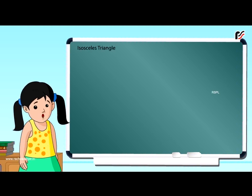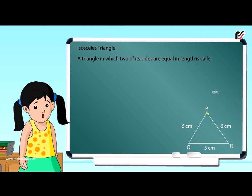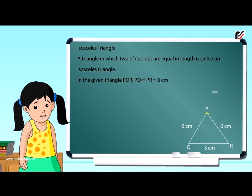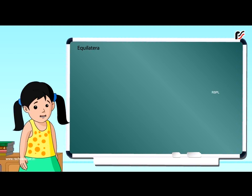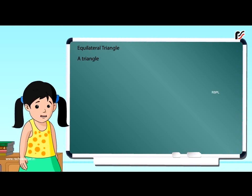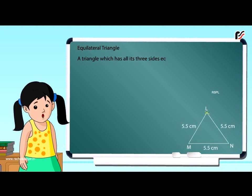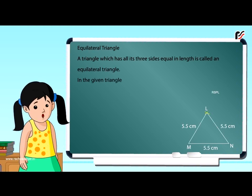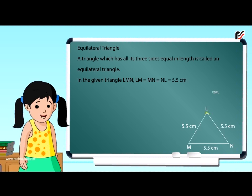Isosceles triangle: A triangle in which two of its sides are equal in length is called an isosceles triangle. In the given triangle PQR, PQ is equal to PR, equal to 6 cm. Equilateral triangle: A triangle which has all its three sides equal in length is called an equilateral triangle. In the given triangle LMN, LM = MN = NL = 5.5 cm.